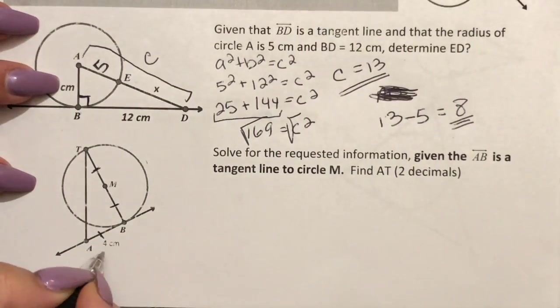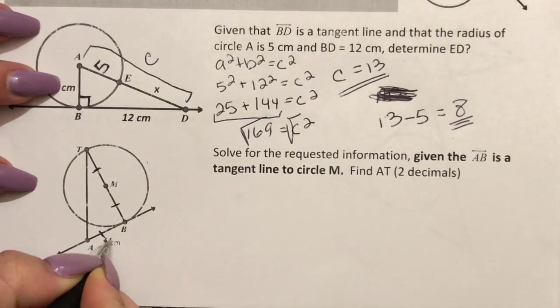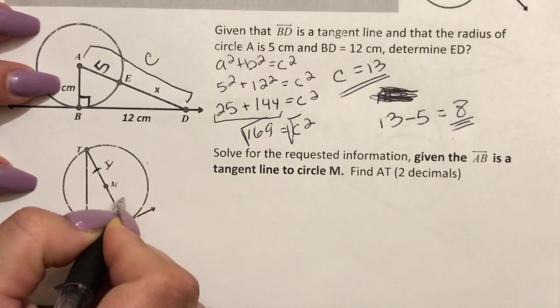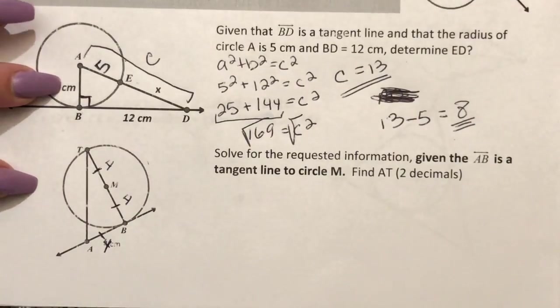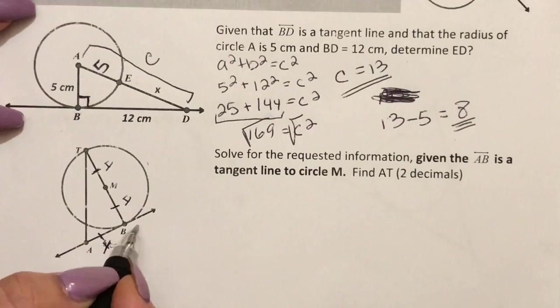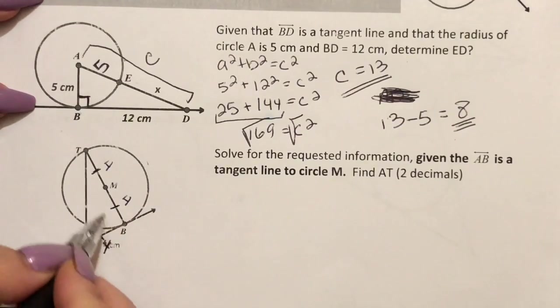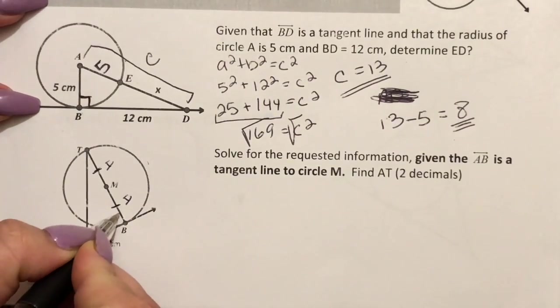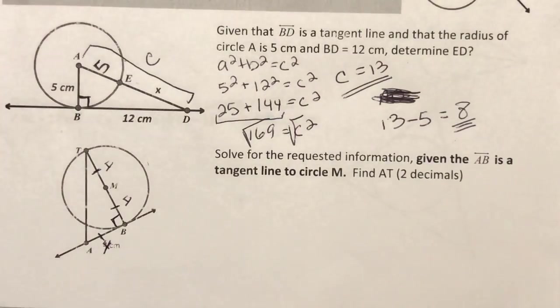So if I know that this side is a 4 then I know that these sides are also 4 because they all have that congruent mark there. I also see that this line is tangent to this radius so I know that this is going to create a 90 degree angle. So now I can see my right triangle so I can set up my A squared plus B squared equals C squared.